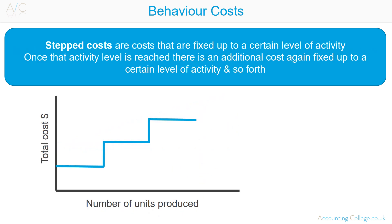Stepped costs are costs that are fixed up to a certain level of activity. Once that activity level is reached, there is an additional cost — again fixed up to a certain level of activity, and so forth. A good example of stepped costs would be supervisor costs: if one supervisor is required for every 10 workers, as the number of workers increases, so will the supervisory costs.